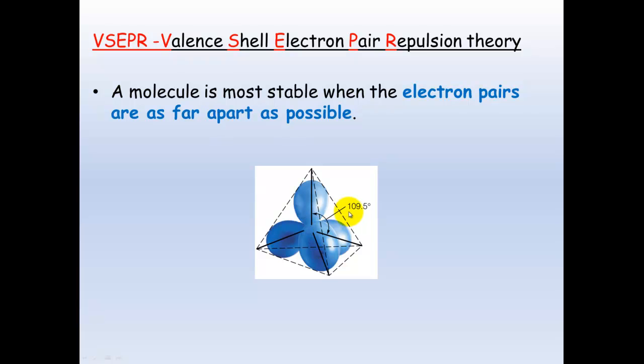They move apart at 109.5 degrees, as far apart from each other as they possibly can be. When we write it on paper, because it's three-dimensional and paper is two-dimensional, we draw it like this with one at the top and three down at the bottom, indicating they're as far apart from each other as possible.